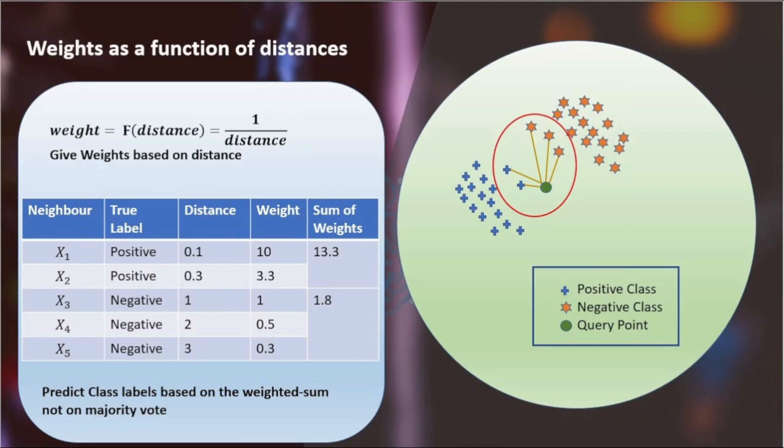For classification tasks, when determining the predicted class, the contributions of neighbors are scaled by their weight. Closer neighbors have a stronger influence on the prediction. For regression tasks, the values associated with neighbors are multiplied by their weight before averaging, giving more importance to closer neighbors in the prediction.